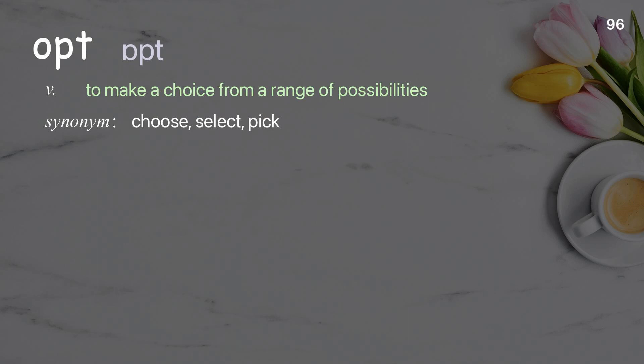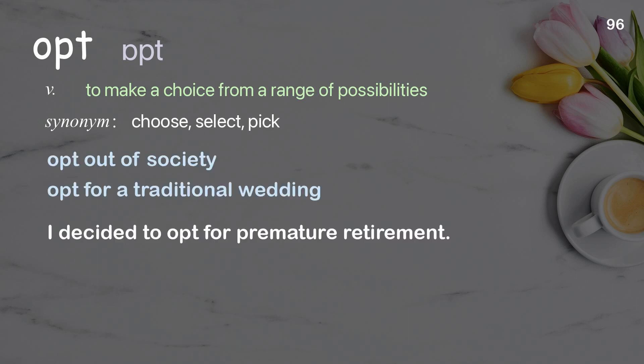Opt: to make a choice from a range of possibilities. Examples: opt out of society, opt for a traditional wedding. I decided to opt for premature retirement.